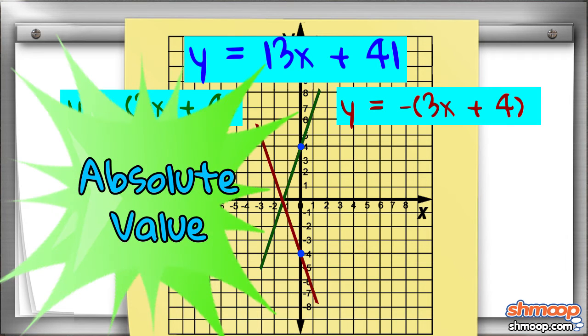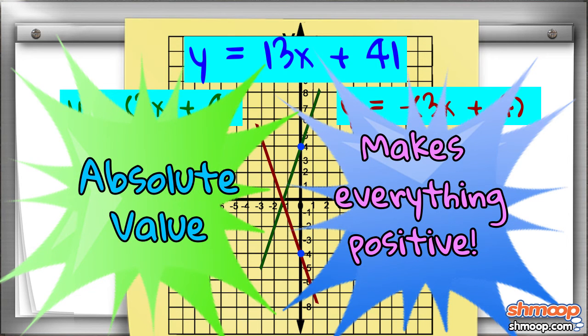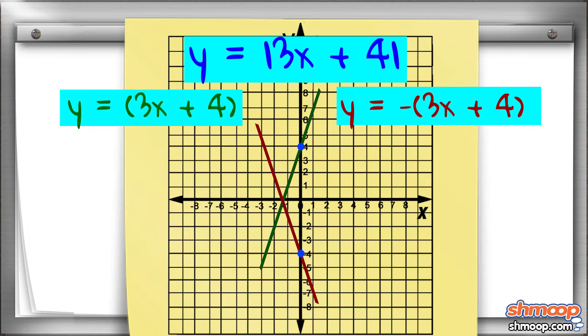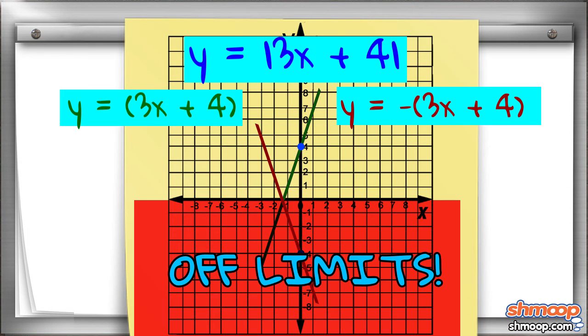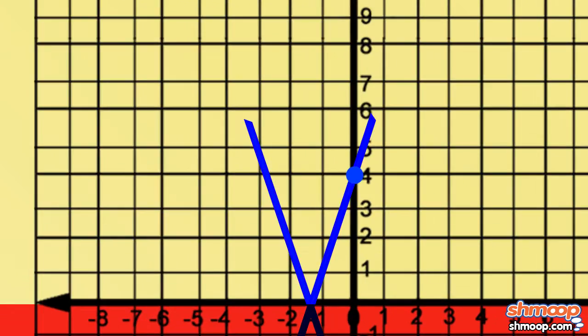But remember what absolute value is all about, making things positive. That means anything below the x-axis is off limits. We should end up with a big V-looking thing.